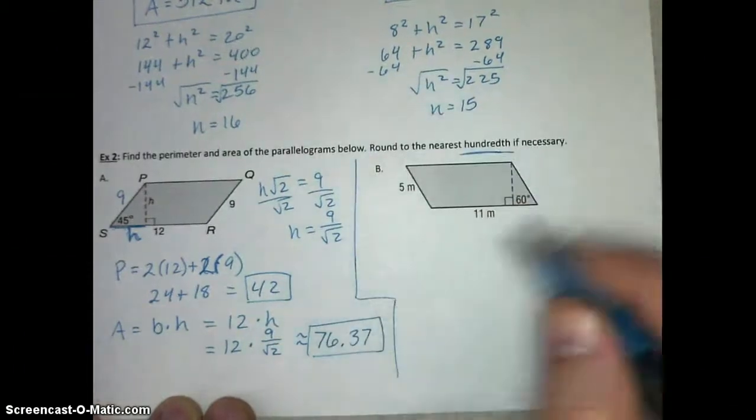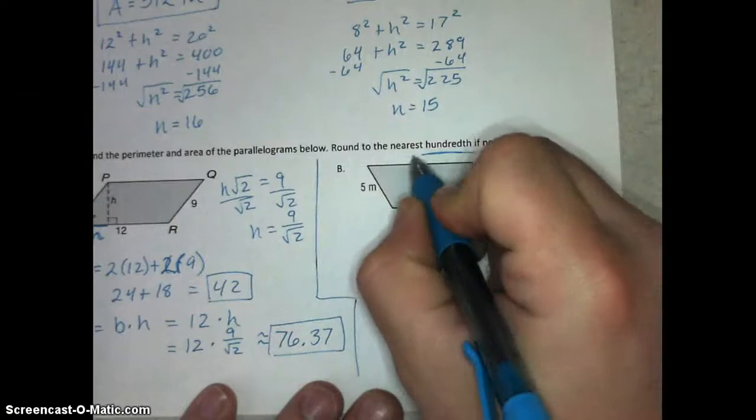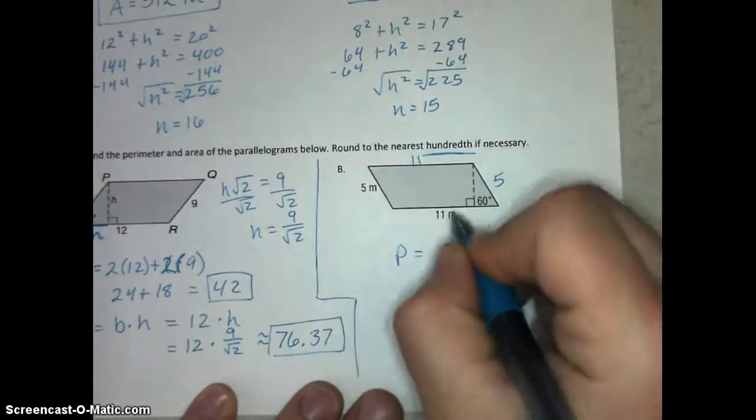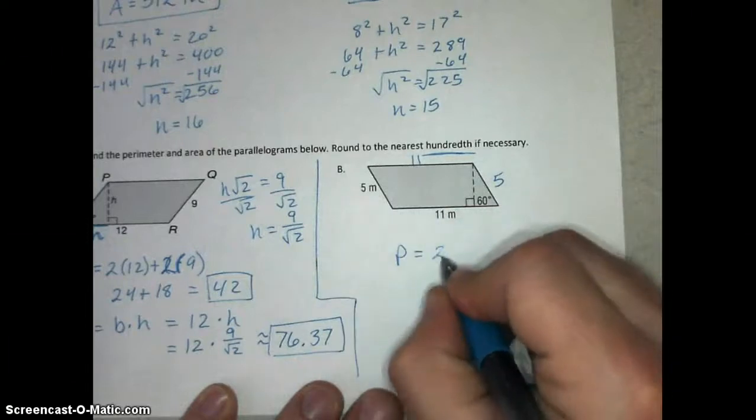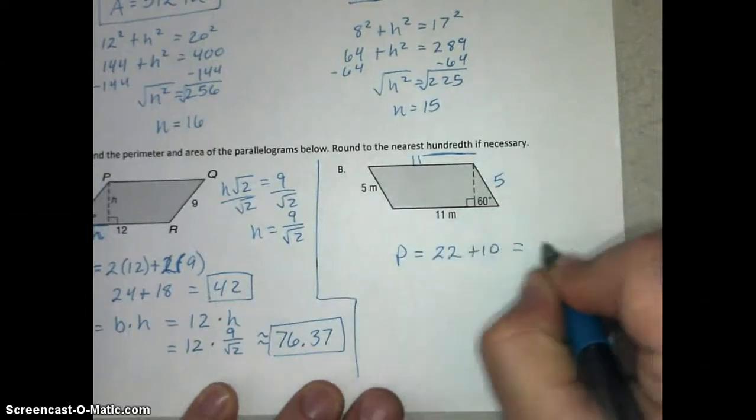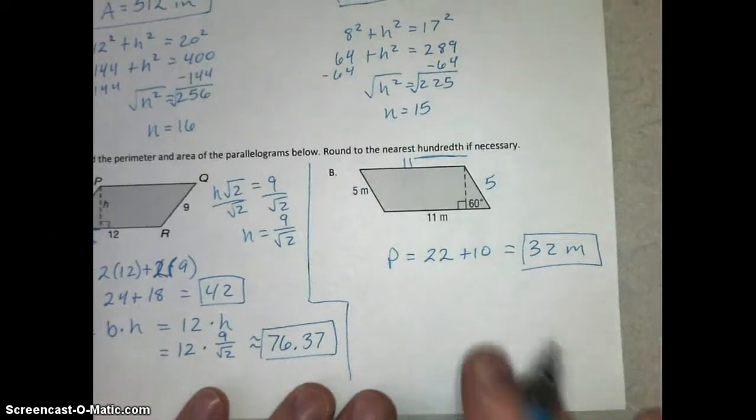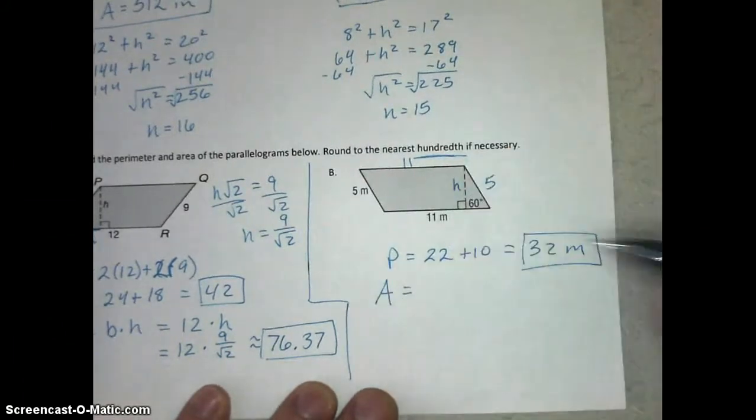Part B, we're going to work out very much the same way. Perimeter should be pretty easy, because these sides are 11, these sides are 5. You can find perimeter. 11 and 11, 5 and 5, that's 22 plus 10, that's 32 meters. Perimeter is pretty straightforward. It's area that requires a little bit of calculation, because we need to know the height of the parallelogram.